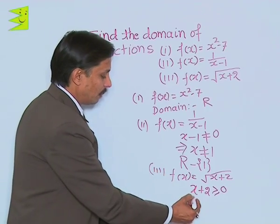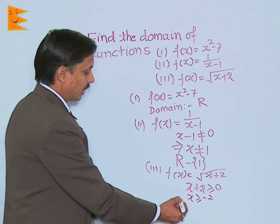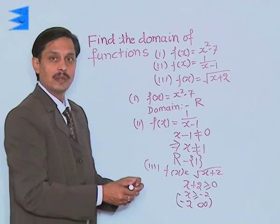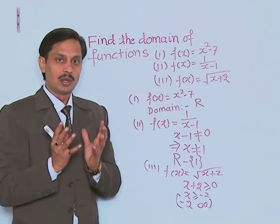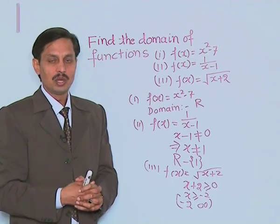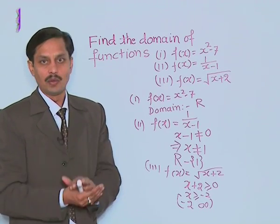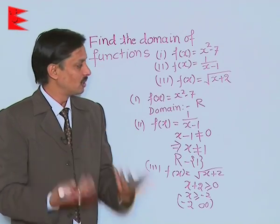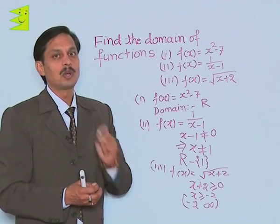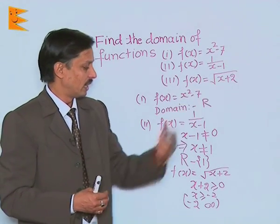Hence the domain becomes x ≥ -2, or we can write it as [-2, +∞). So while calculating the domain of any function, we should ensure the denominator is not 0, and inside a square root symbol there should be no negative value. Otherwise the domain is every real number, but in such cases we rule out values that make the denominator 0 or the square root negative.